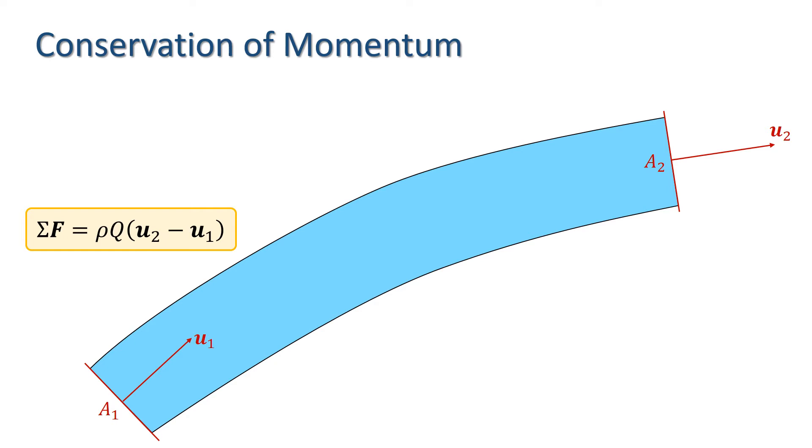The momentum equation is a vector equation so it can be written as a set of equations for different directions as shown here. Sigma F is the sum of all the forces acting on the body of fluid under consideration, i.e. the control volume. Usually these forces are pressure forces, the weight of the fluid, and the force exerted on the fluid in the control volume by any external bodies such as the walls of a pipe.